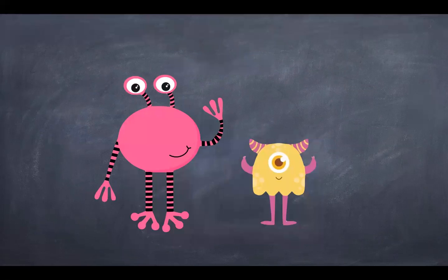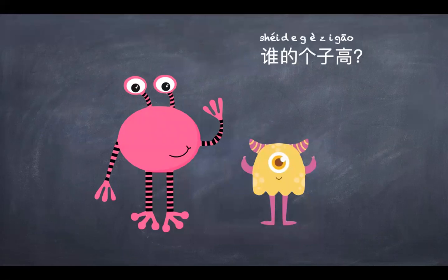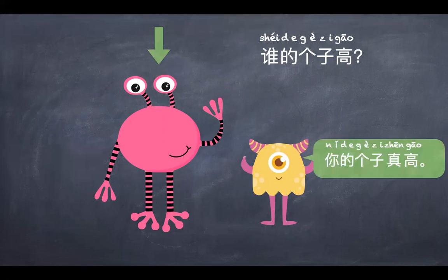This one — 谁的眼睛大? 她的眼睛大. So the little monster would probably say, 你的眼睛真大.